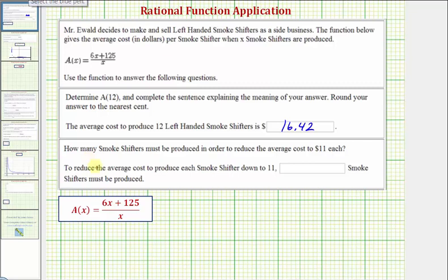Next, we're asked how many smoke shifters must be produced in order to reduce the average cost to 11 dollars each. So now we're given the average cost, or A of x, equals 11. We want to find the input of the number of smoke shifters that must be produced. So now we'll substitute 11 for A of x and solve for x. We'd have the equation 11 equals the quantity 6x plus 125 divided by x. So to solve this rational equation,